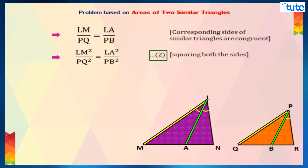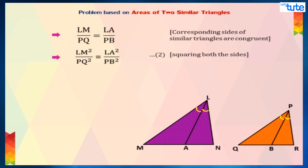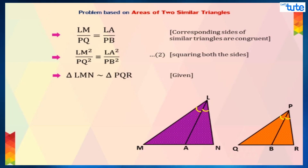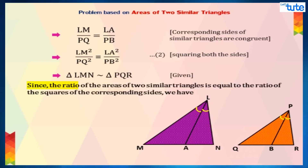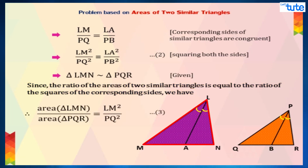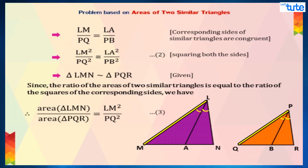On squaring both sides, we get LM square upon PQ square equals to LA square upon PB square. Consider this as equation 2. As is given to us, triangle LMN is similar to triangle PQR. Since the ratio of the areas of two similar triangles is equal to the ratio of the squares of their corresponding sides, we can see that area of triangle LMN upon area of triangle PQR equals to LM square upon PQ square. Consider this as equation 3.